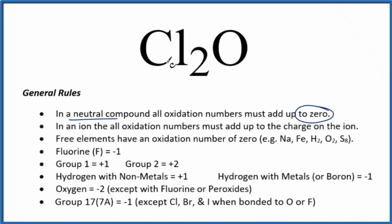We're used to chlorine having an oxidation number of negative one, but when it's bonded to oxygen — when this chlorine, which is in group 17, is bonded to oxygen or fluorine — they're more electronegative. We can't tell its charge just by looking at these rules.